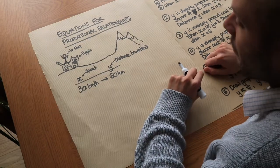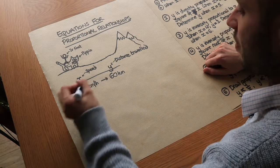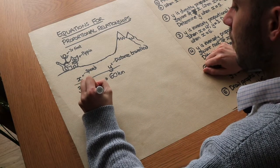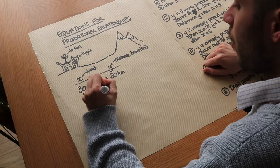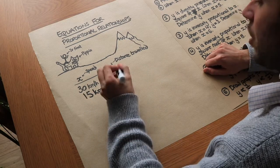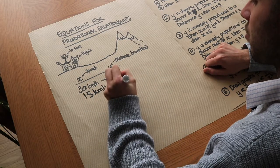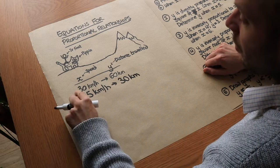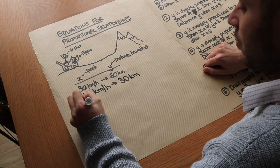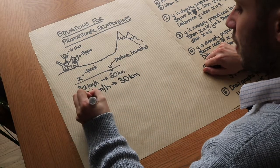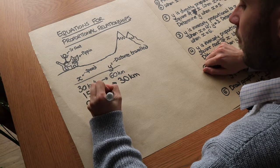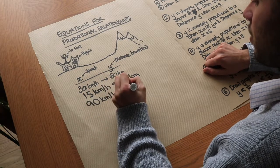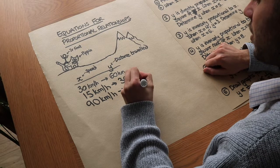What would happen if I was to halve my speed? If I halved the speed I would only travel half as far, so I would travel 30 kilometers. What about if I was to triple the speed? If I triple the speed to 90 kilometers per hour I would also triple the distance covered, so it would be 180 kilometers.